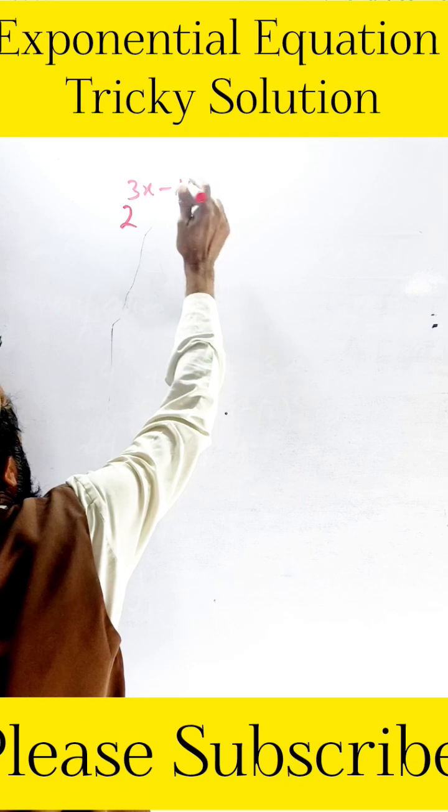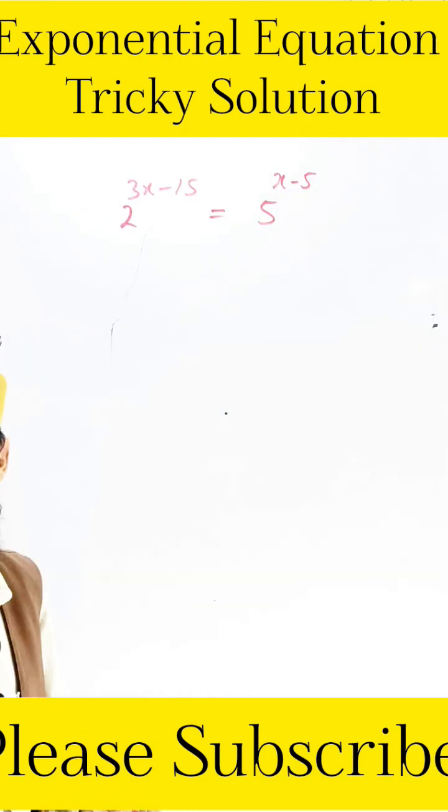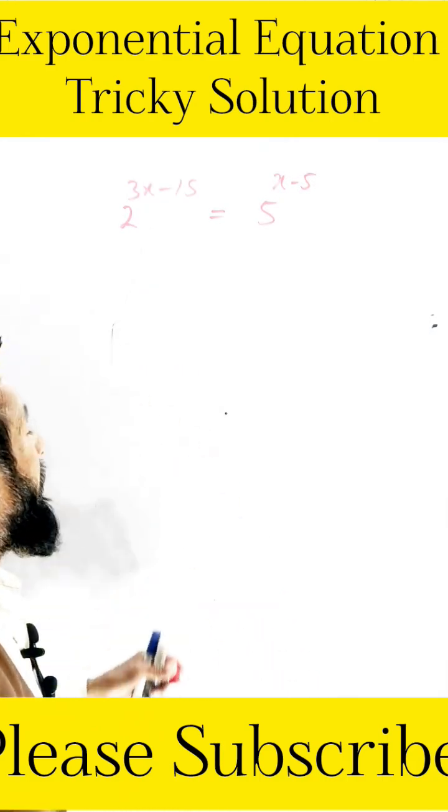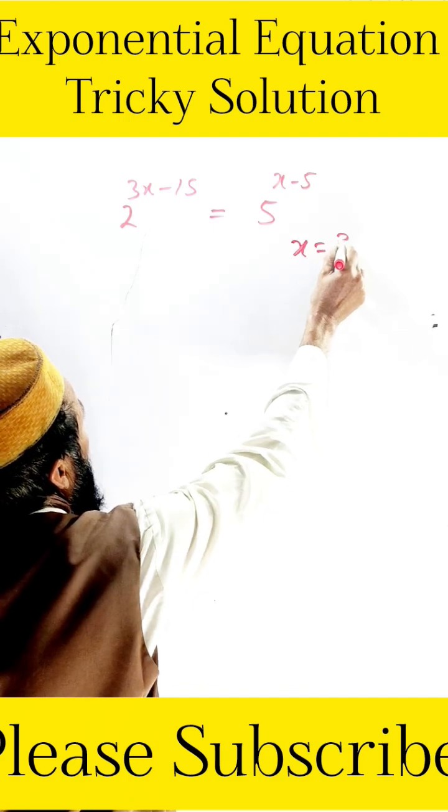...is equal to 5 exponent of x minus 5. So very tricky question, both base and power are different. So how can we find the value of x, the unknown?